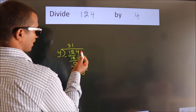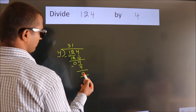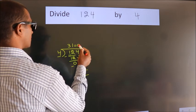After this, no more numbers to bring down. And we got remainder 0. So this is our quotient.